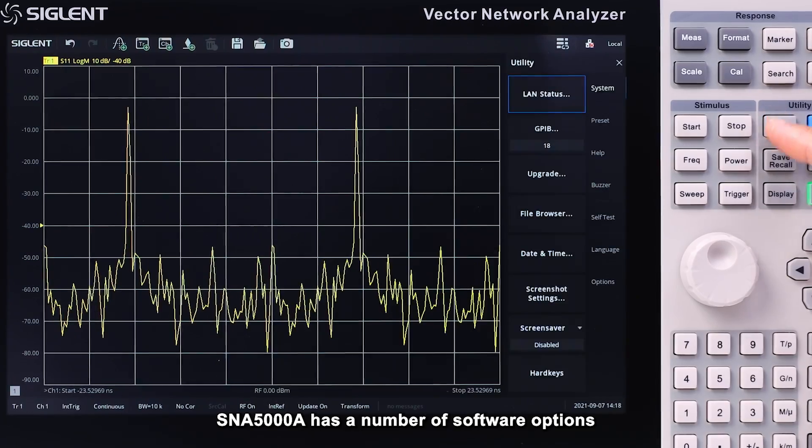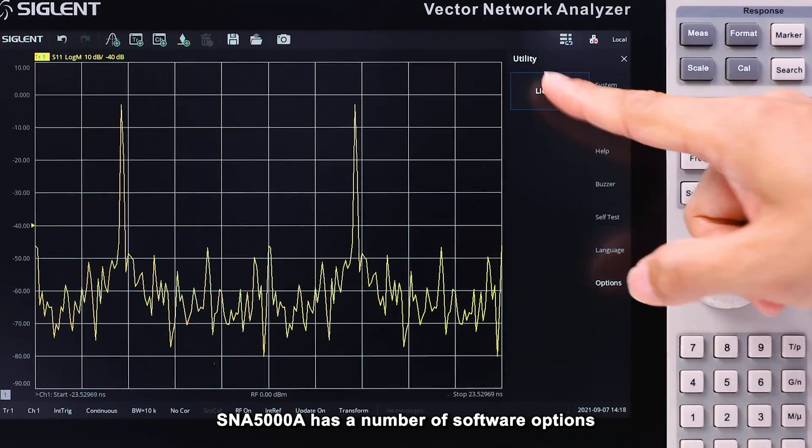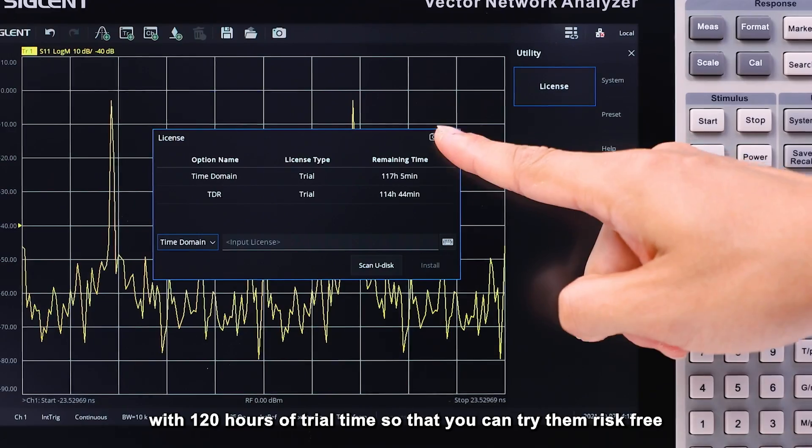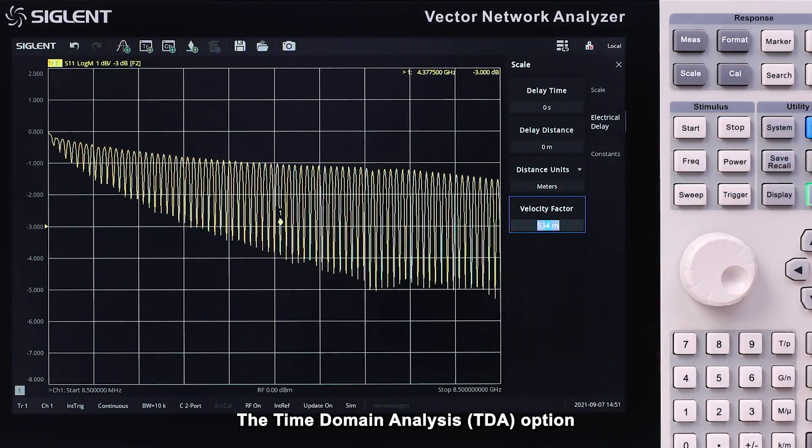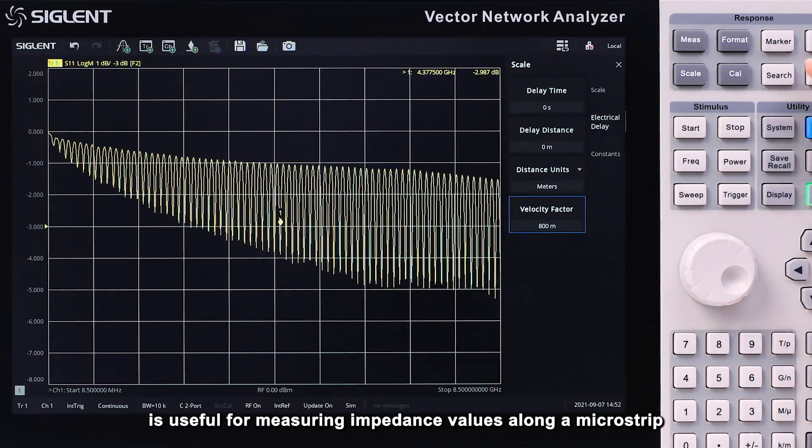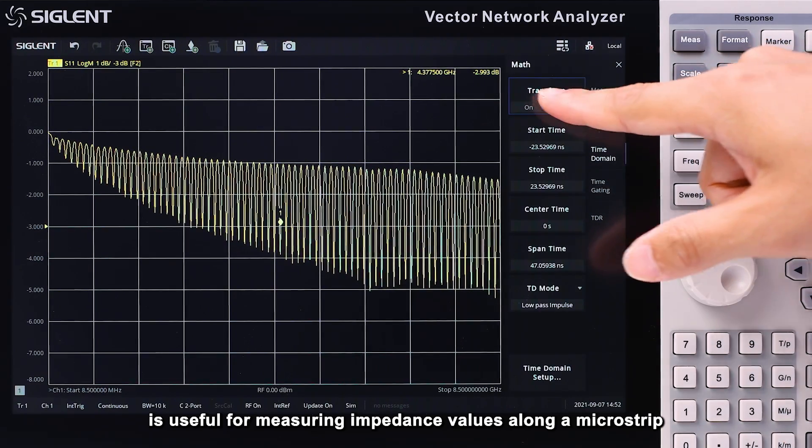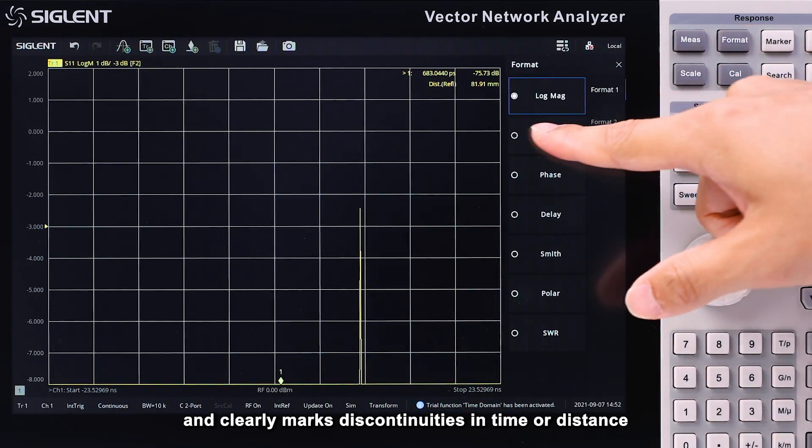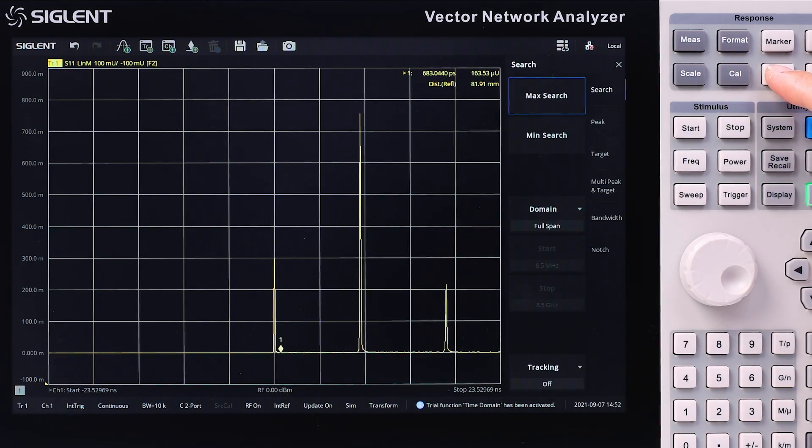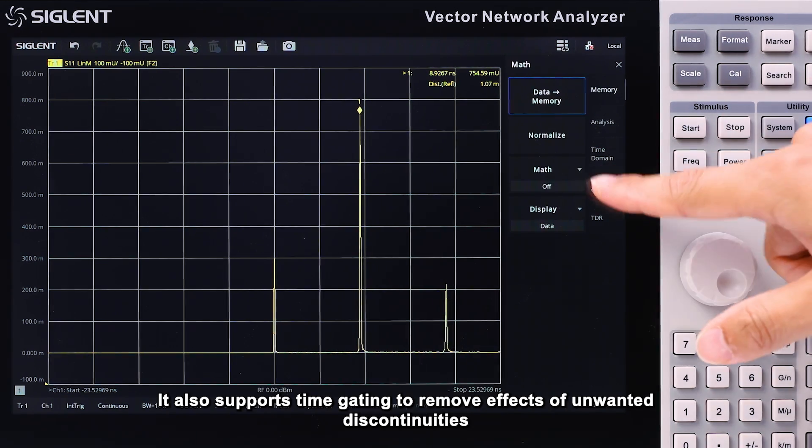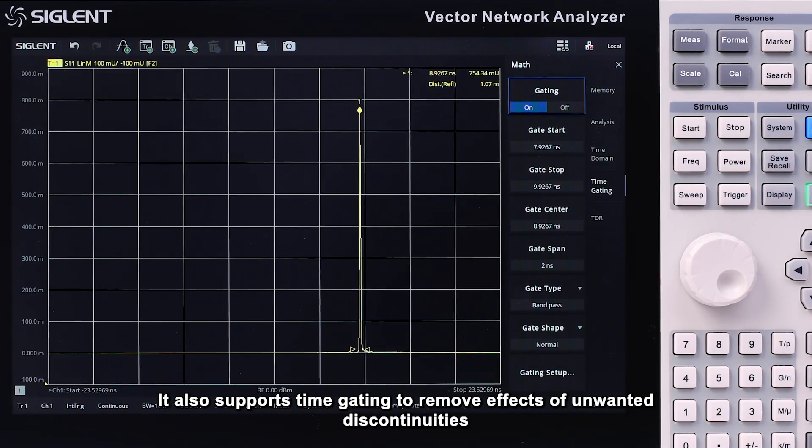The SNA 5000A has a number of software options with over 120 hours of trial time, so that you can try them risk-free. The time domain analysis option is useful for measuring impedance values along a microstrip, and clearly marks discontinuities in time or distance. It also supports time gating to remove the effects of unwanted discontinuities.